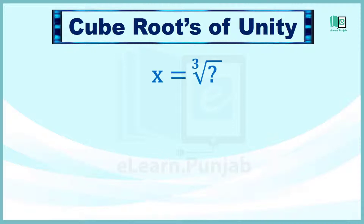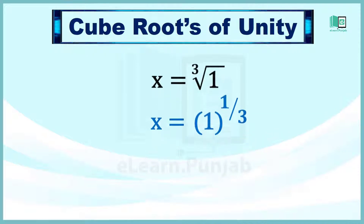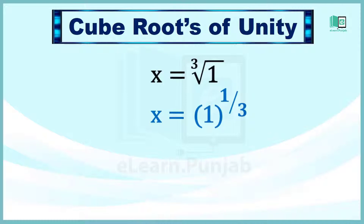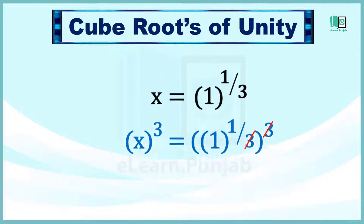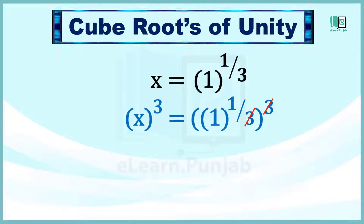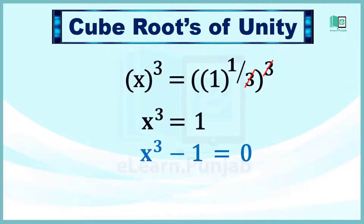सबसे पहले फर्ज करें कि x वो cube root है जिसको हमने find करना है। यानि x is equal to cube root of 1, जिसको x = 1^(1/3) भी लिखा जा सकता है। दोनों अतराफ का cube लेने से x cube is equal to 1 हासिल होगा। और 1 को left side पर shift करने से x cube minus 1 is equal to 0 equation हासिल हो जाएगी।